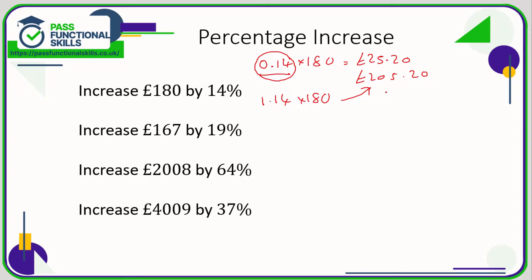So there are two ways: you can either multiply the total by your basic multiplier and then add that on — in other words, work out 14% and then add it on — or instead of using your basic multiplier, use your multiplier for a percentage increase, which is 1.14. That takes you directly to the answer in one step, whereas using 0.14 is two steps.